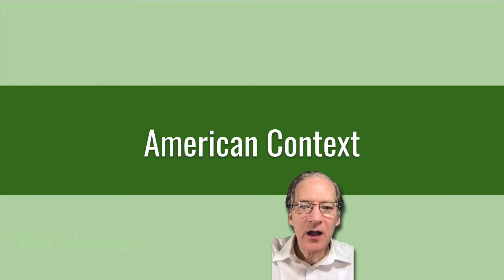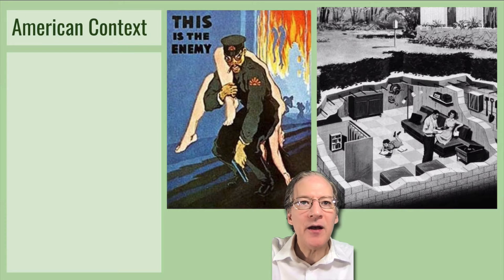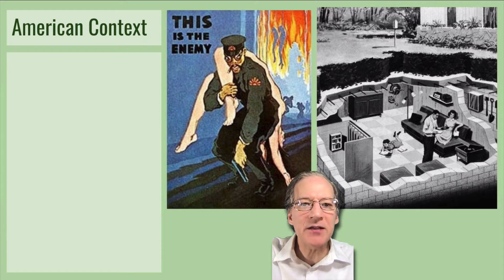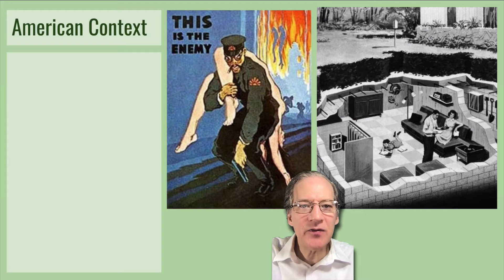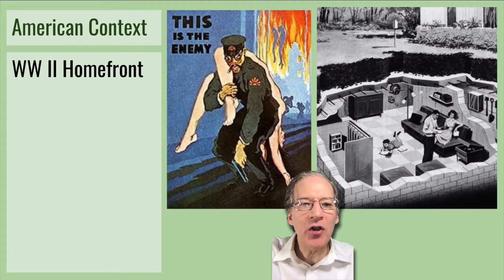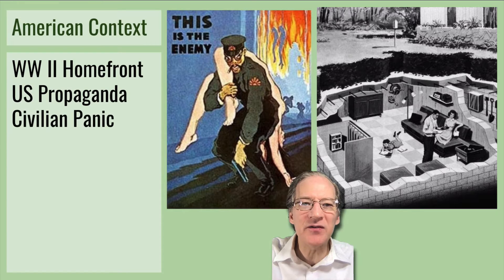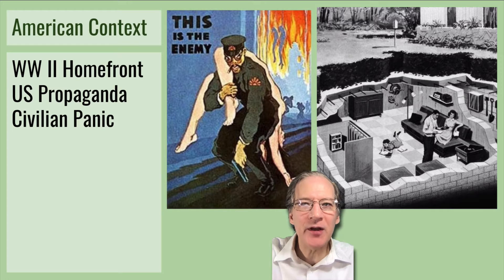In the American context at the time, there was certainly plenty of propaganda against the Nazis. This is an illustration showing a cartoon demonized Japanese figure assaulting a very pale-skinned woman. This propaganda caused civilian panic on the home front. On the right, you see a bomb shelter — that's really more of a 1950s bomb shelter to defend against a nuclear attack.